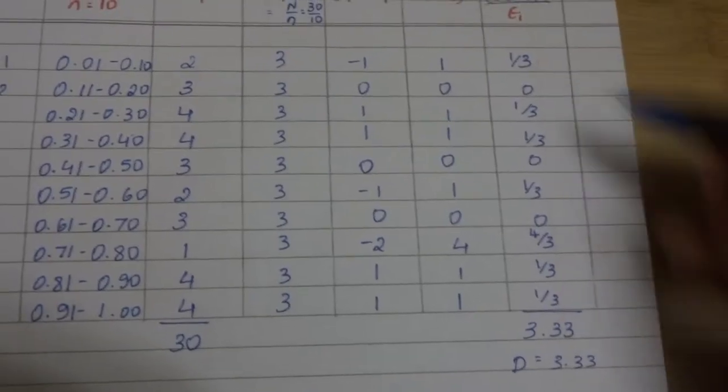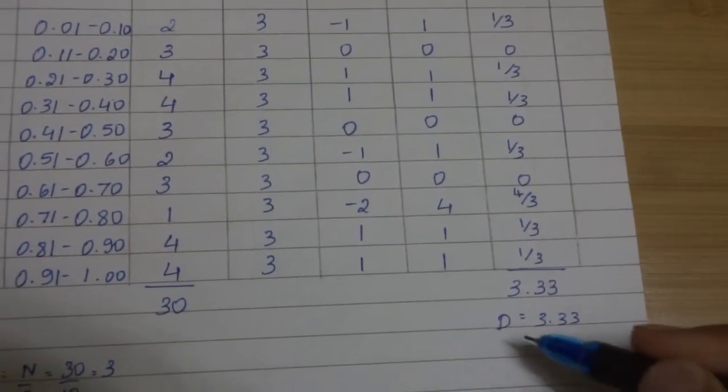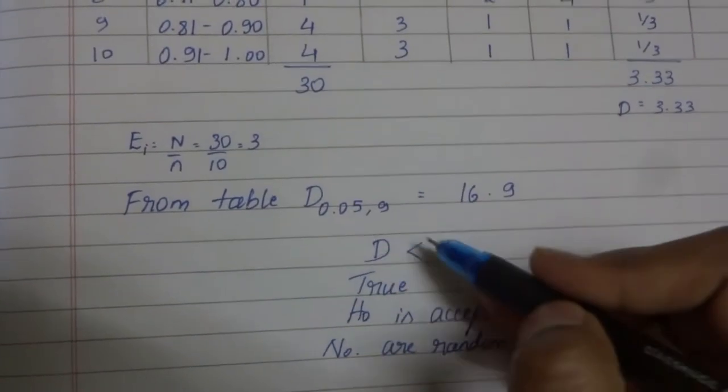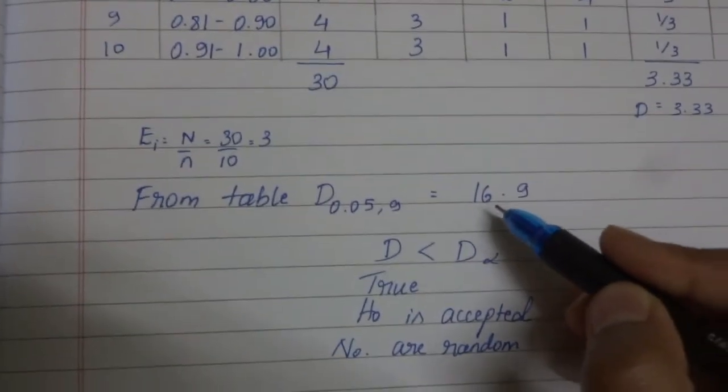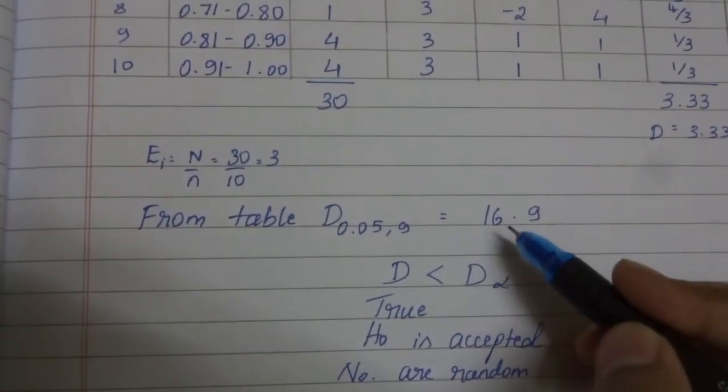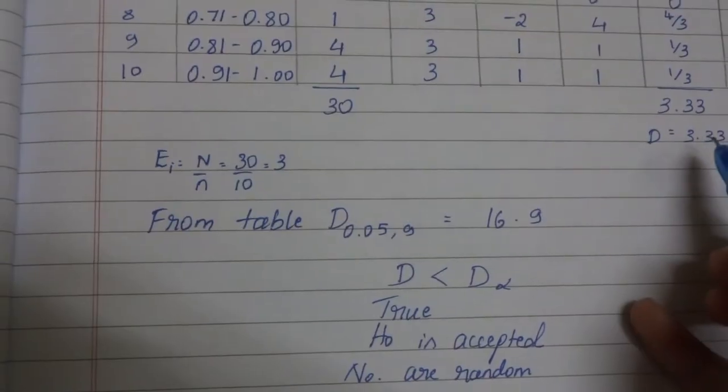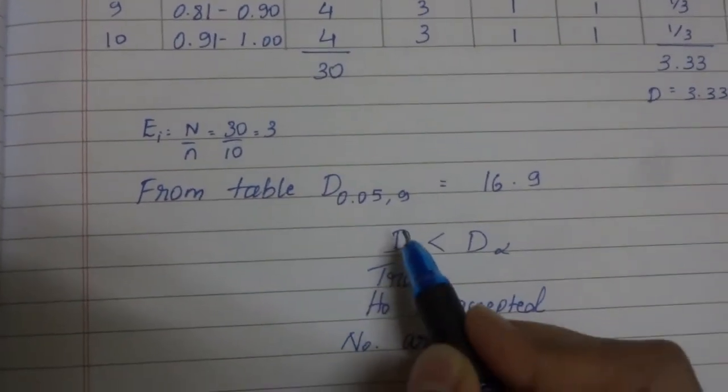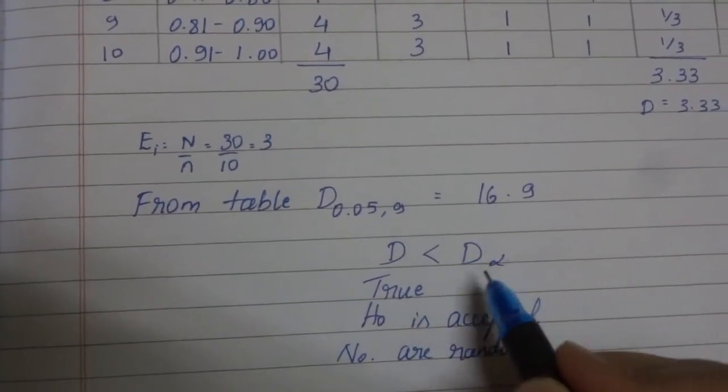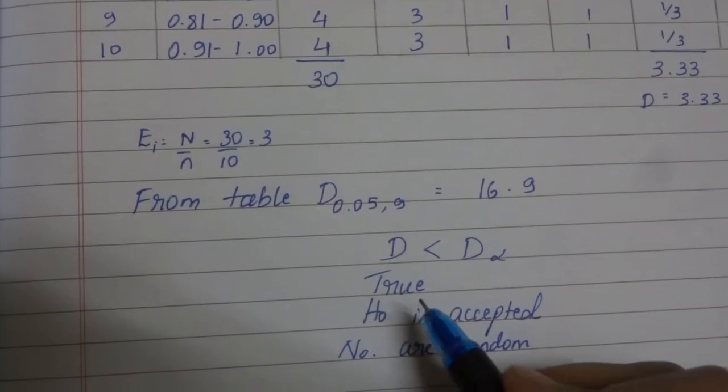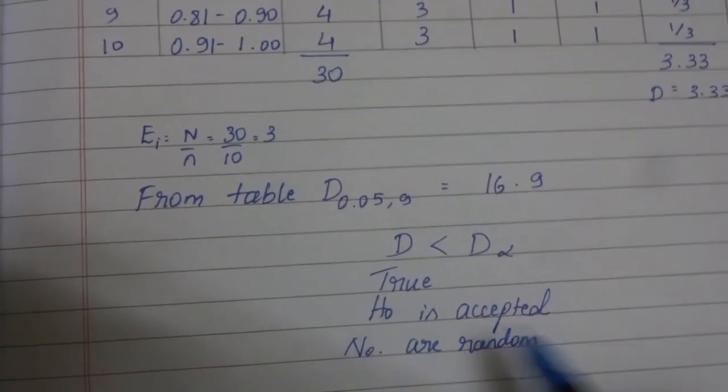When you sum it up, you get 3.33, that is the D value. From the table, we could find the D alpha value to be 16.9, which is much greater than the D value. So we can tell that D is less than D alpha. The condition is true, so the null hypothesis is accepted.